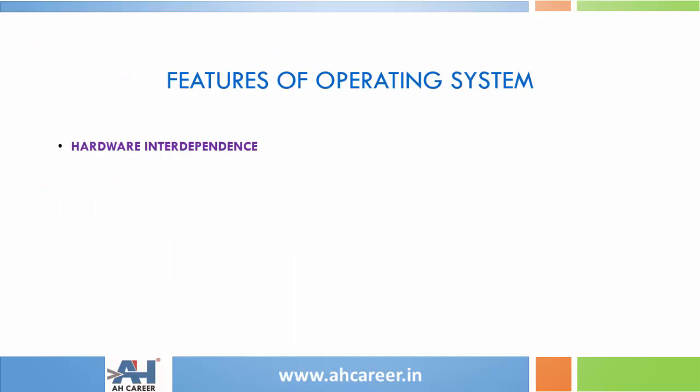Now we move on to features of operating system. The first feature is hardware interdependence. Hardware interdependence means both hardware and software are interdependent on each other. To produce useful results, hardware and software must work together. In hardware interdependence, we focus on dependency upon the hardware.